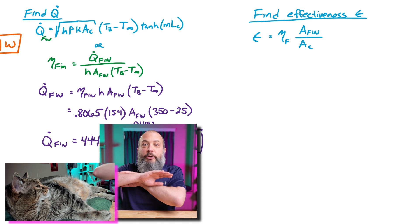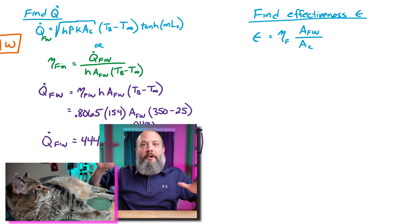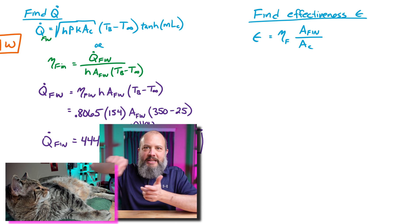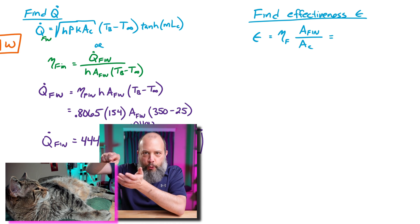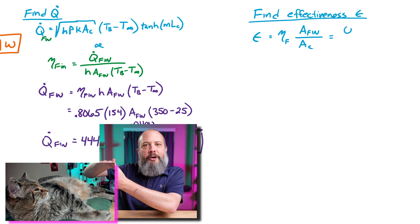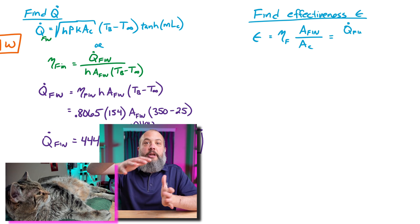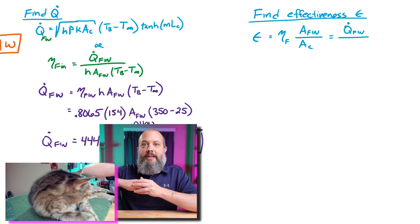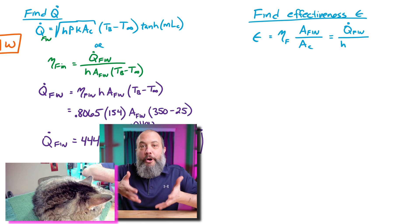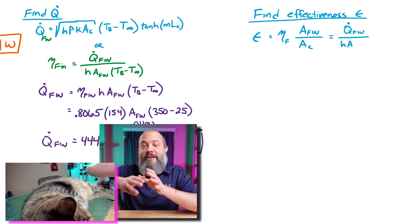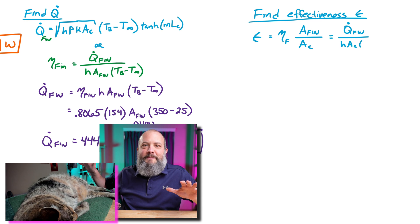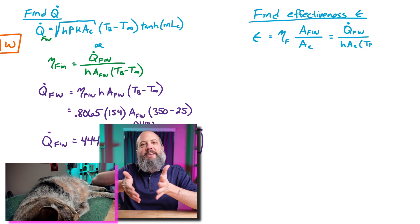So effectiveness is just heat transfer from the wall with the fin versus heat transfer from the wall without the fin. So like imagine we did not have the fin there at all. You would just get heat transfer by convection from just like the cross-sectional area at the wall. And by adding the fin, we add more surface area so we get more convection. And so the question is, how much more convection do we get having the fin versus if we hadn't even built it at all? That is effectiveness.